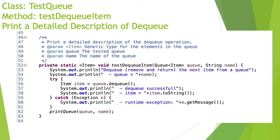Now let's implement the same for the dequeue method. Again, we print a description of the operation — the queue from which we'll try to get the element — and then show whether we got any error or if the dequeue was successful. If successful, we also show the item retrieved. At the end we print the new structure of the queue so we can see how it was modified.